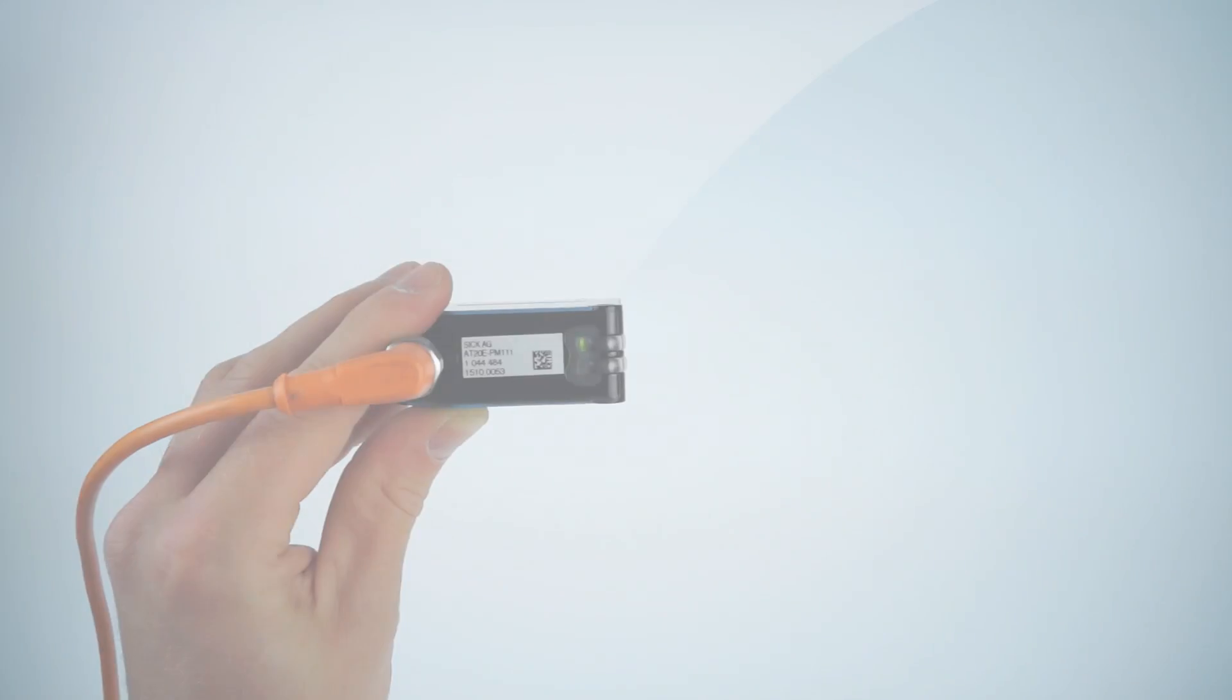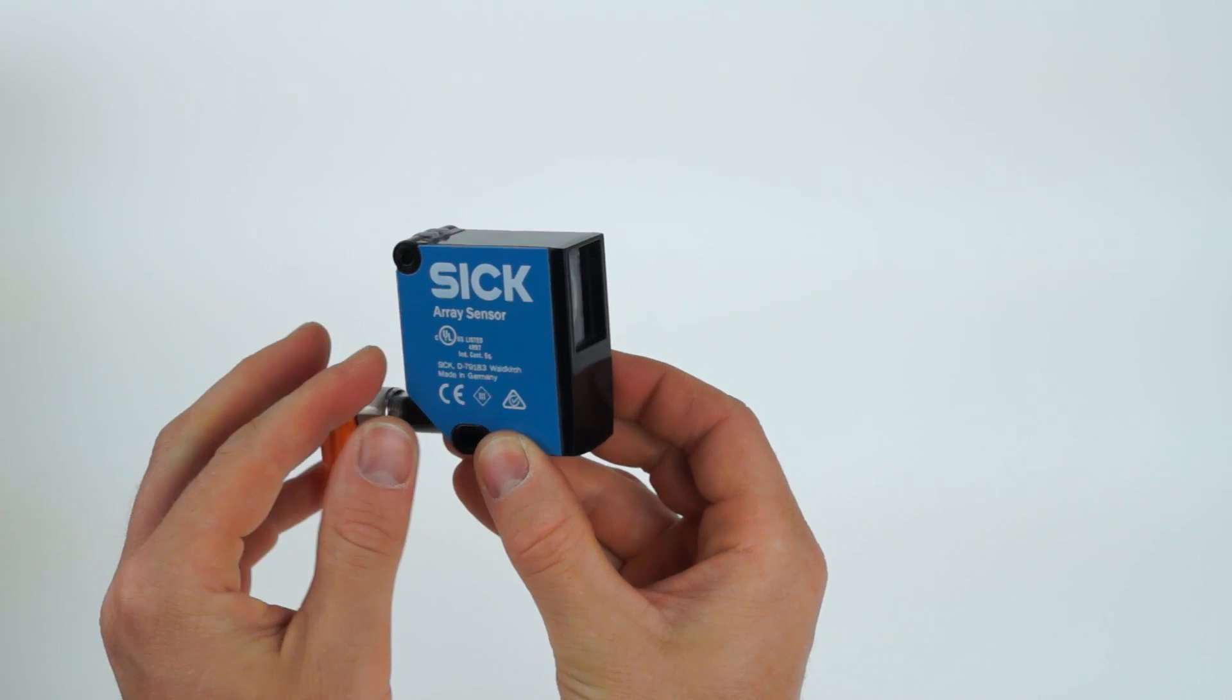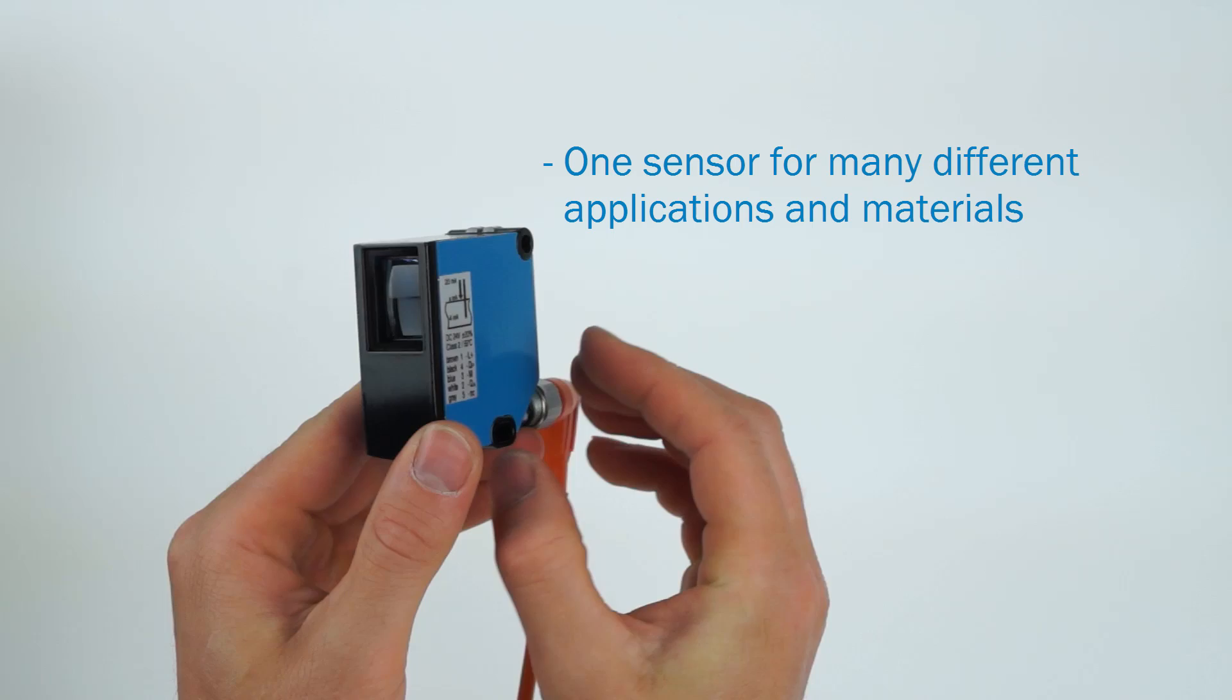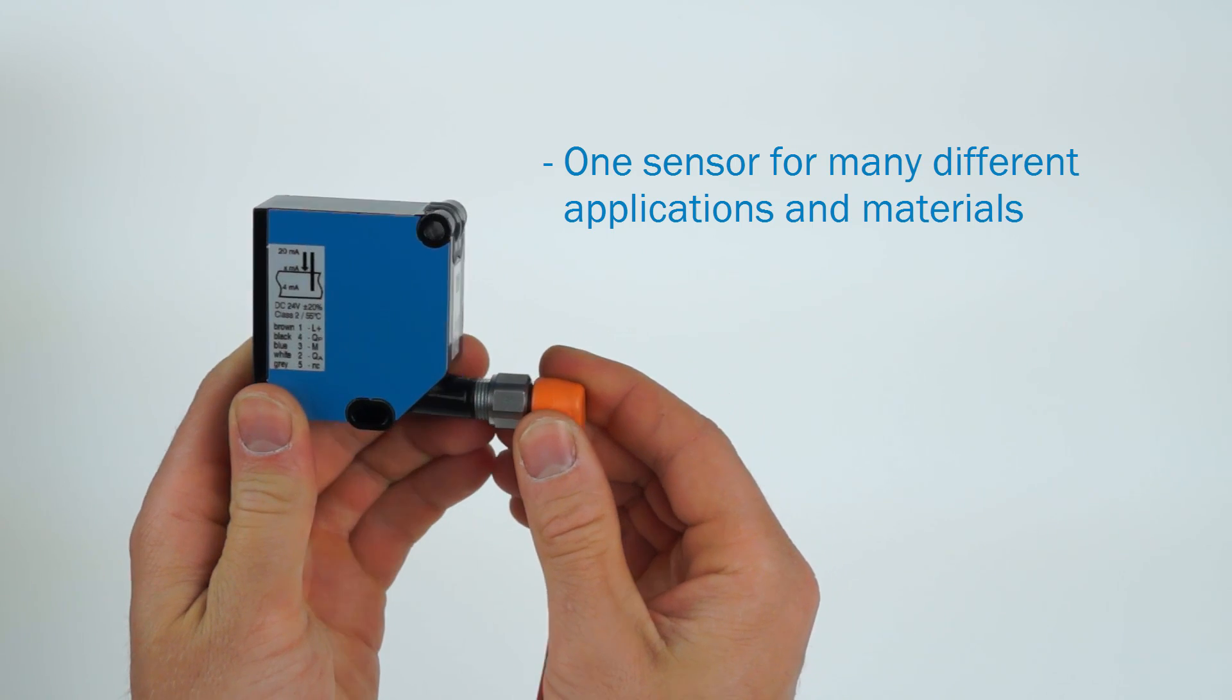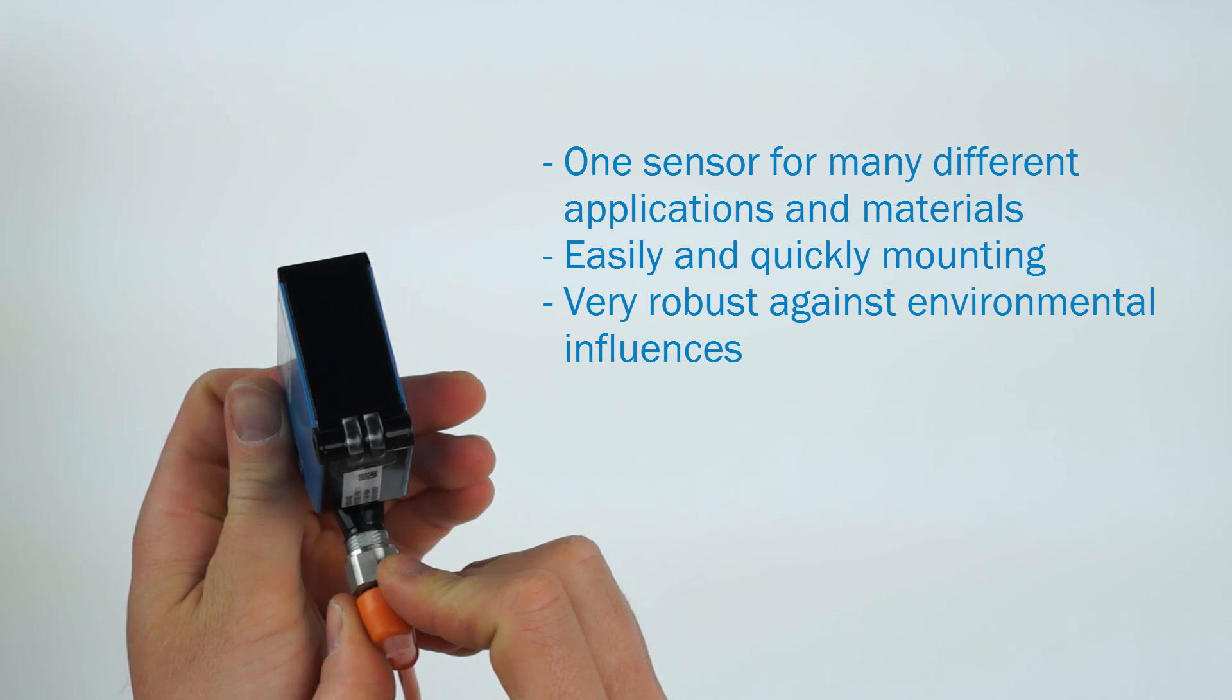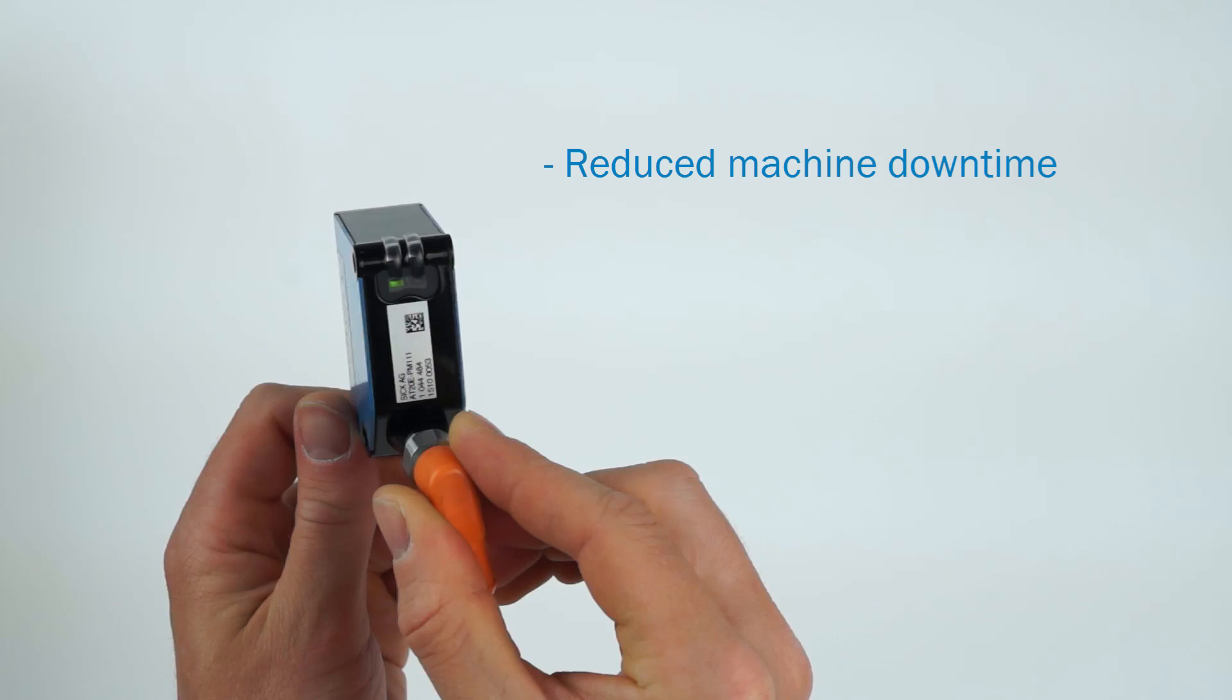The array sensor is a cost-effective solution when comparing it for example with a camera system with similar accuracy. It is one sensor for many different applications and materials. The sensor is easily and quickly mounted and is very robust against environmental influences, thus reducing machine downtime.